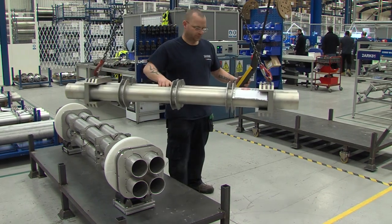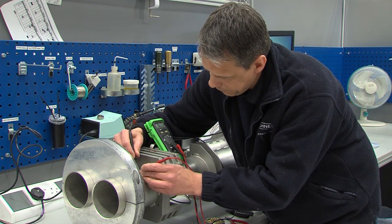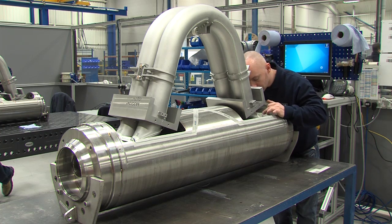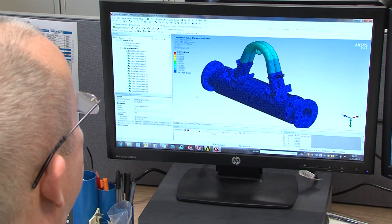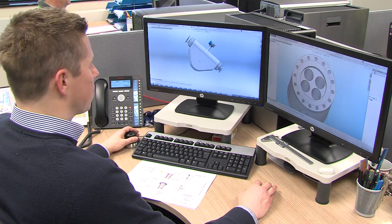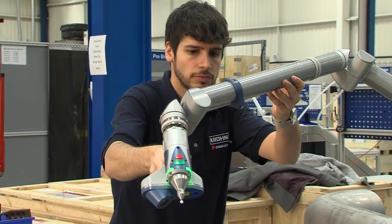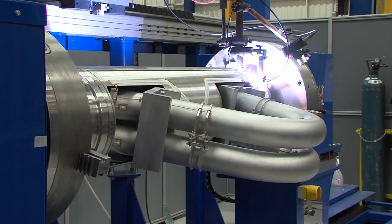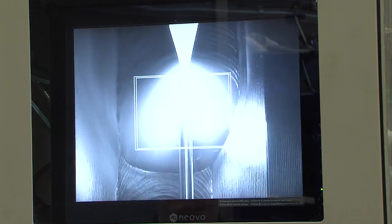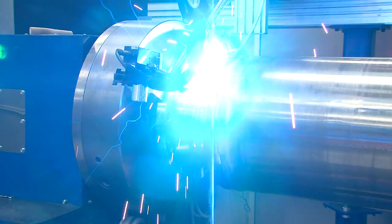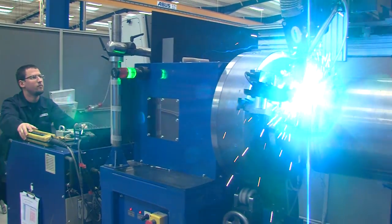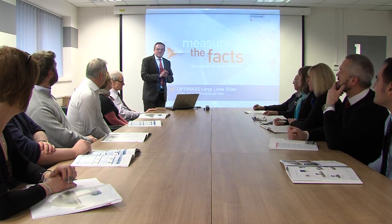Krona UK is the group's global center of excellence for Coriolis mass flow meter technology. The large line size meter production facility has been purpose-built, and production capacity has been doubled with state-of-the-art manufacturing and training and conference facilities also available.